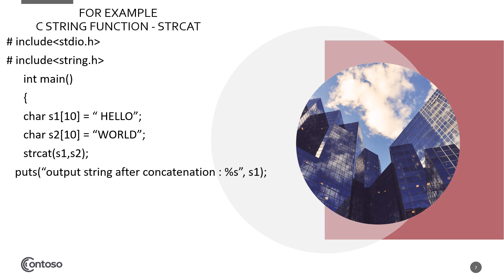Strcat s1, s2 will concatenate s1 and s2. Puts output string after concatenation. I hope you are understanding this code, which is very easy to understand.